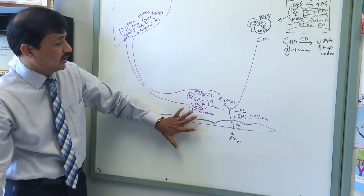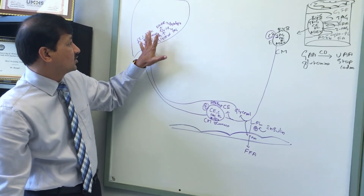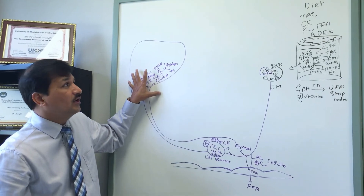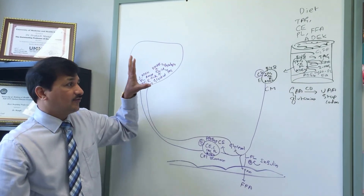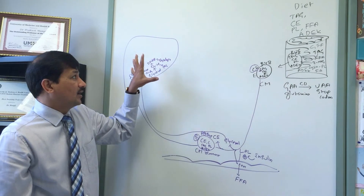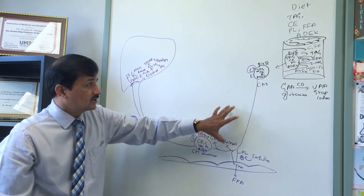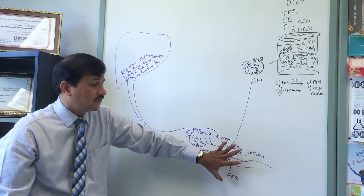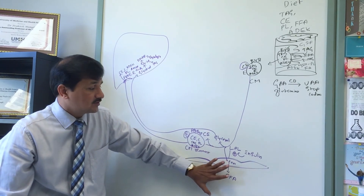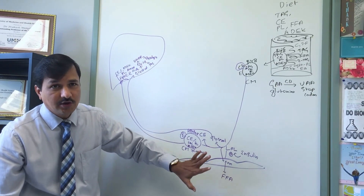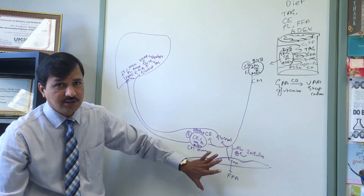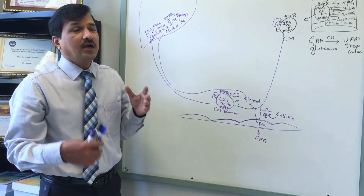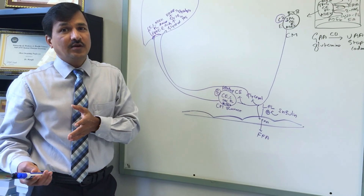Chylomicron remnants carry cholesterol ester, cholesterol, phospholipid, and fat-soluble vitamins to the liver, where they are offloaded. This is how dietary lipids are transported from the intestine to the liver, except for the triacylglycerol portion used by peripheral tissues. Different tissues express different forms of LPL — for example, cardiac myocyte LPL has a low KM (high affinity) and acts on chylomicrons most of the time, whereas adipose tissue LPL has a high KM (low affinity) and uses chylomicrons only when they are abundant in the circulation.